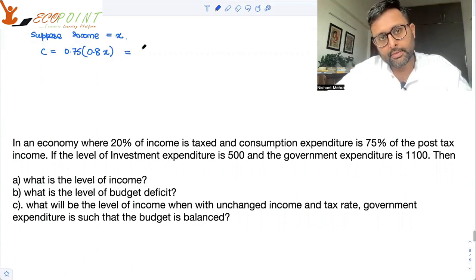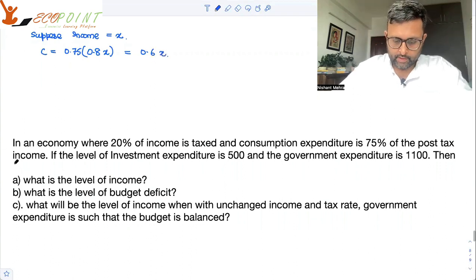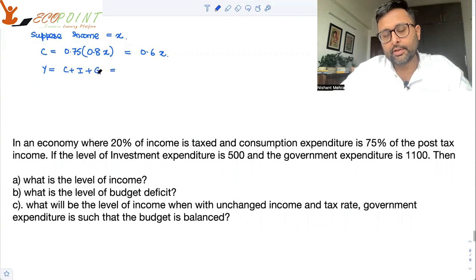and 75% of this 80% is being consumed. So, this thing comes out to be 0.6X. Then you know that output is equal to planned spending C plus I plus G. So, that means what? Consumption is 0.6X.